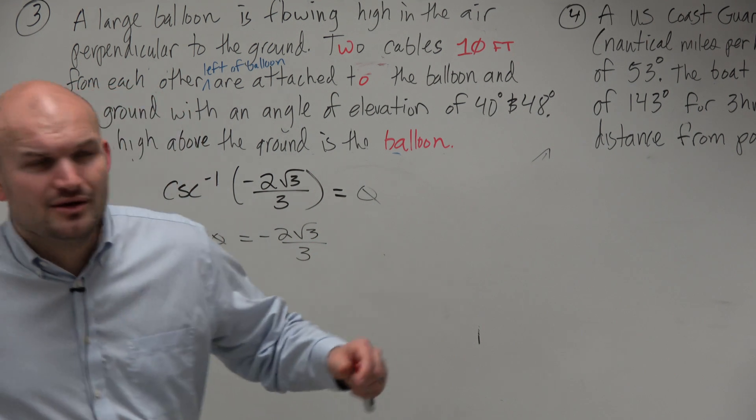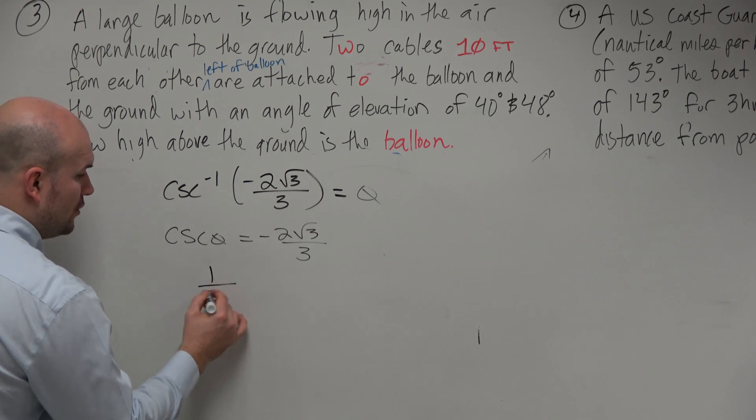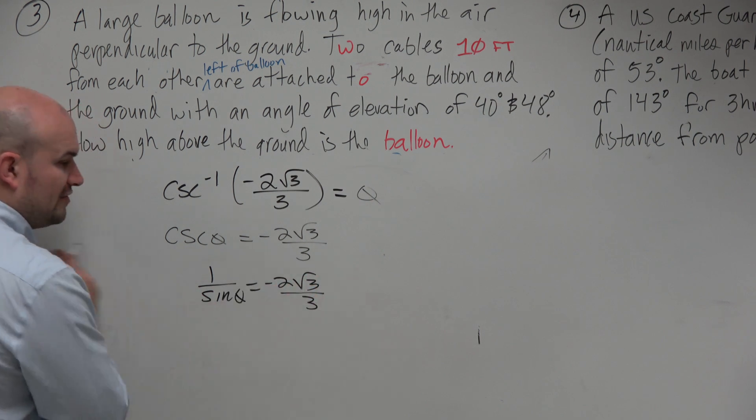But again, I don't like finding the cosecant. Let's go ahead and rewrite this as sine. 1 over sine of theta equals negative 2 square root of 3 over 3.